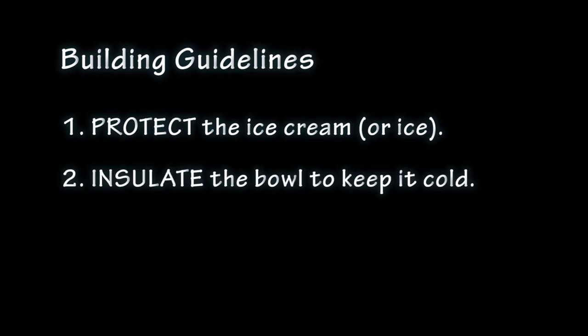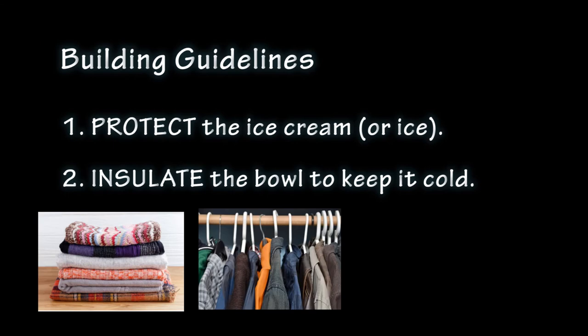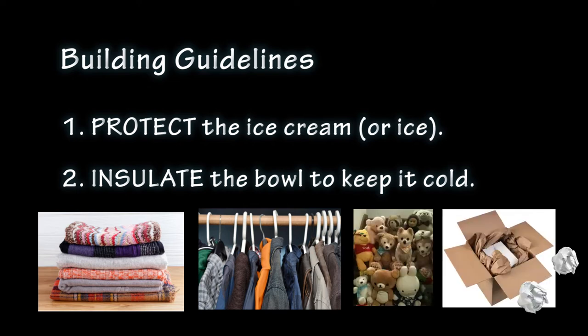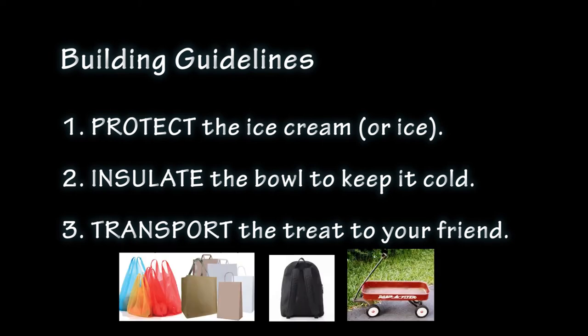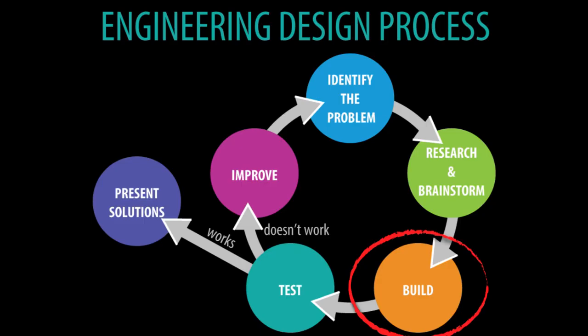Number two: insulate the bowl of ice cream. Once it is protected, you can use some sort of insulator that you have at home to keep the ice cream or ice cold. You can think of things that usually keep things warm, like blankets or coats, and it will work the same way to keep things cold. You might be able to find other items around your house too, like stuffed animals, crumpled up paper balls, or anything else that might keep the ice cream insulated. Number three: you need to transport your treat to your friend. Since you are walking to their home, you need to carry it with a bag, backpack, or something else to deliver it easily. So that's the build step of the process.